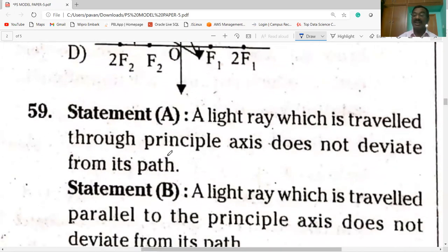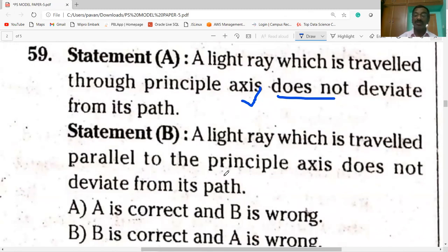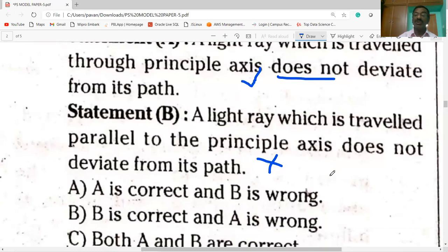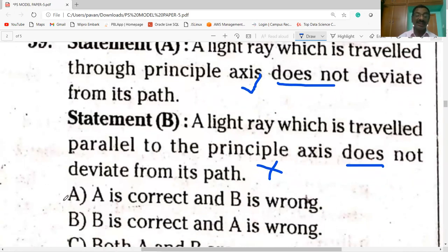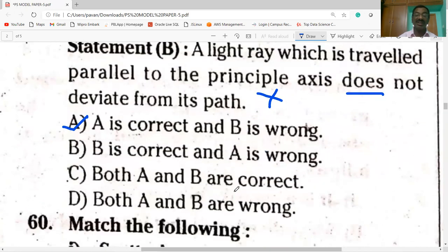Next question on the screen. Light ray which travels through principal axis does not deviate from its path. Statement B is wrong. So option A is correct: statement A is correct and statement B is wrong.